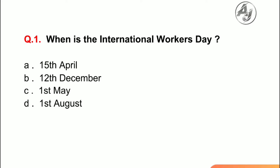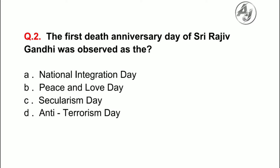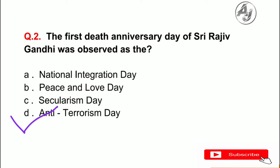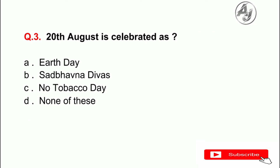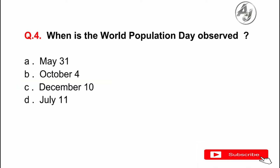Question number 1: When is the International Workers Day? The answer is C — 1st May. Question number 2: The first death anniversary day of Shri Rajiv Gandhi was observed as the — the answer is D — Anti-Terrorism Day. Question number 3: 20th August is celebrated as — the answer is B — Sadhavana Divas.